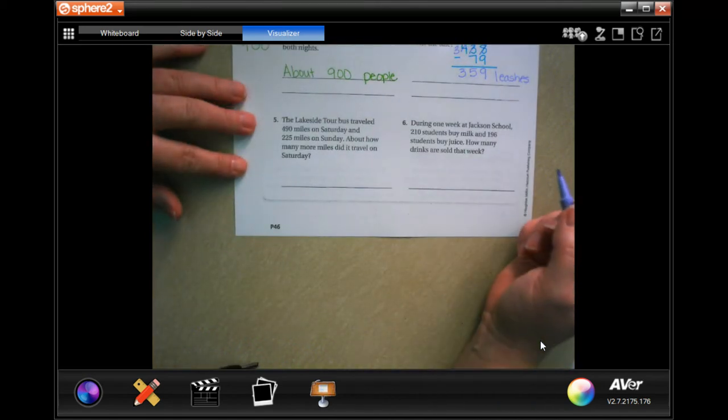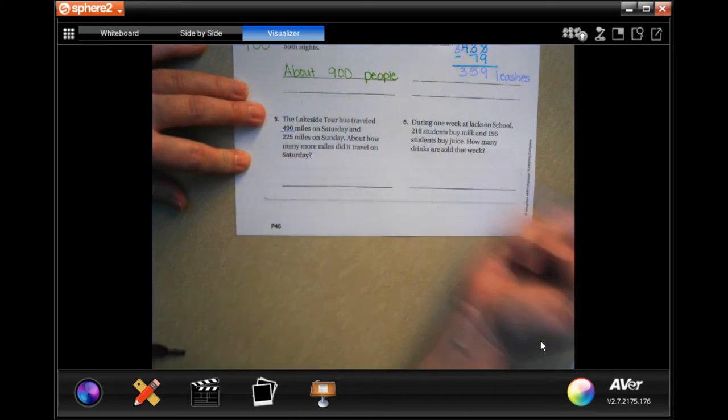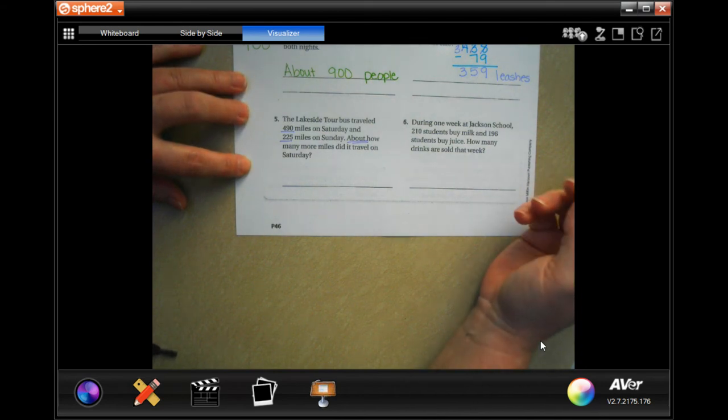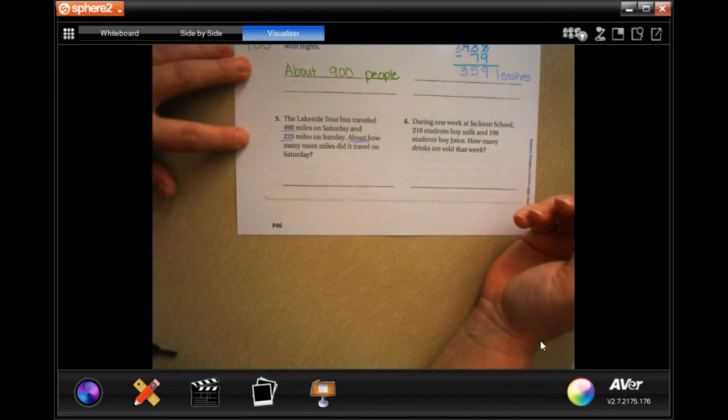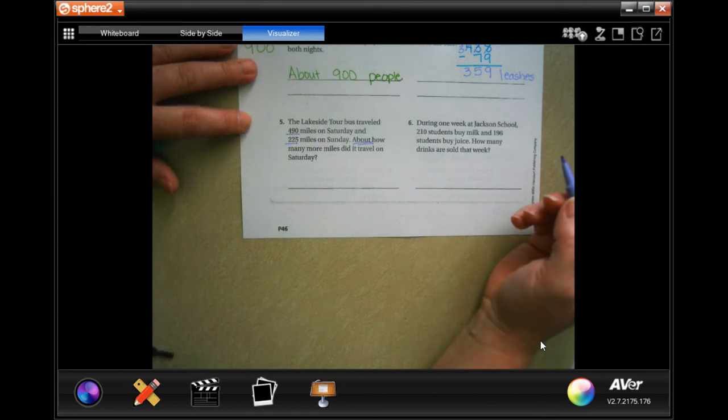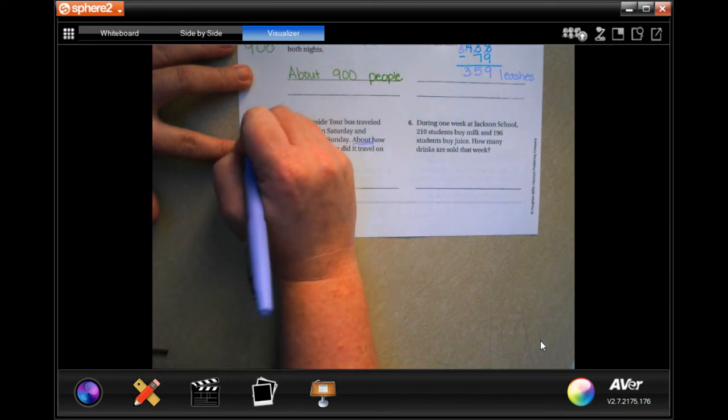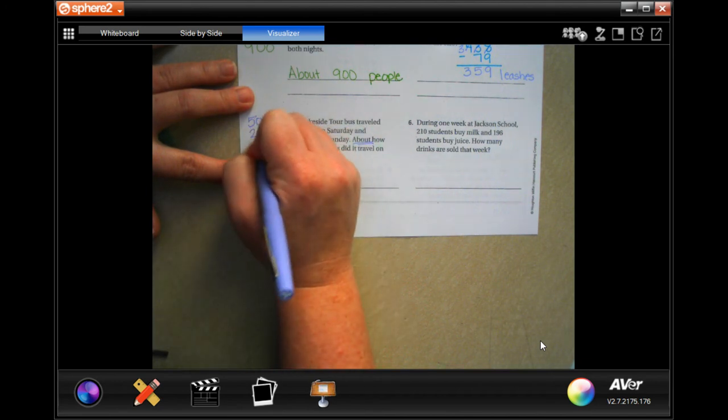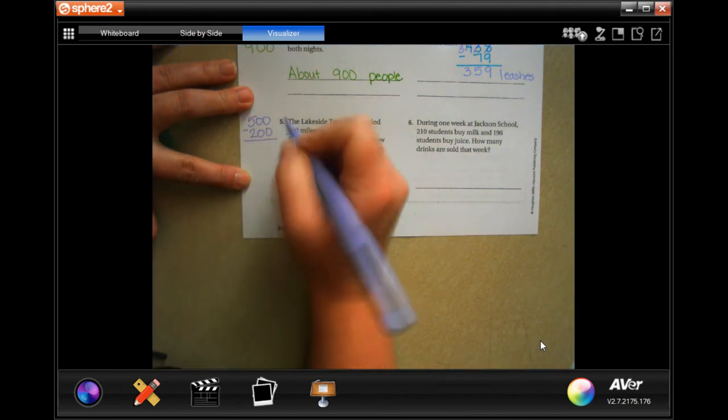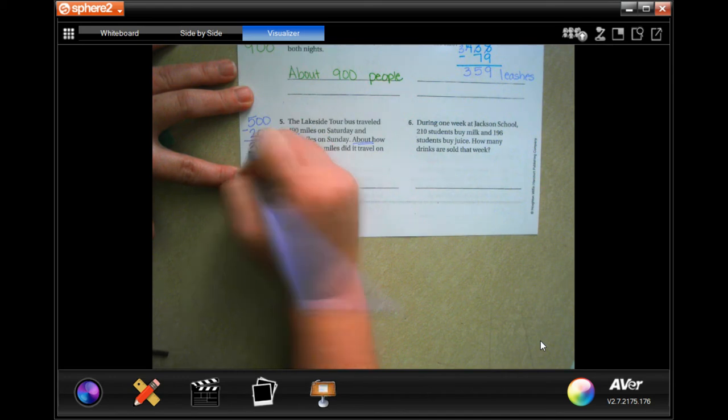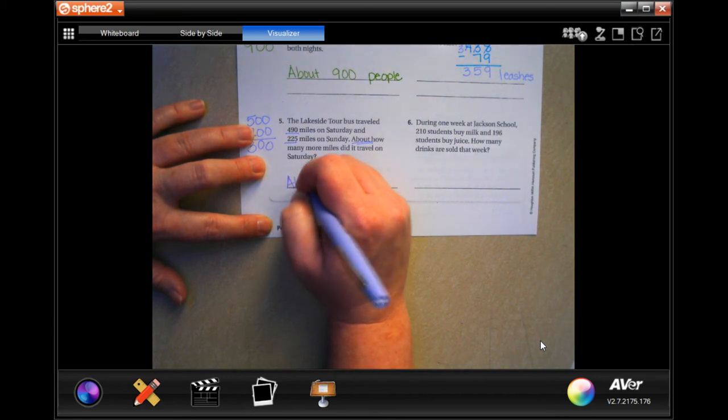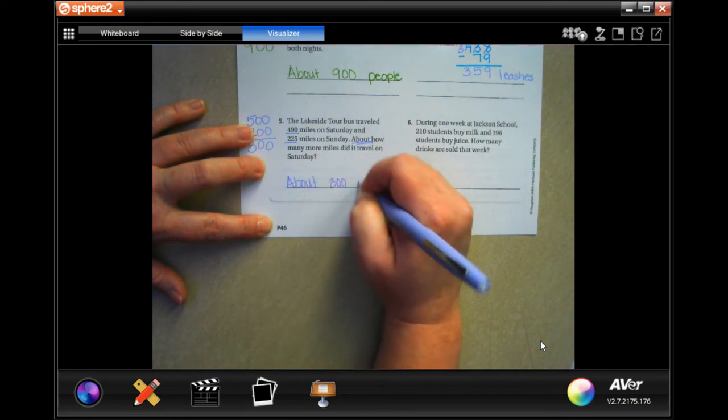The lakeside tour bus traveled 490 miles on Saturday and 225 miles on Sunday. About, which means we're estimating, how many more miles did it travel on Saturday. So we are going to subtract, but we're going to estimate and then subtract. So 490 would round to 500. 225 would round to about 200. And we're going to subtract. So 0, 0, and then 5 minus 2 is 3. So about 300 miles.